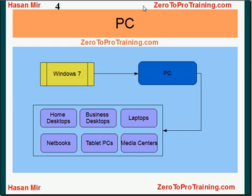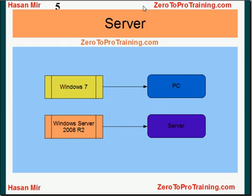Windows 7's server counterpart is called Windows Server 2008 R2. A server computer, sometimes called an enterprise server, is a computer system that provides essential services across a network, to private users inside a large organization, or to public users on the internet.